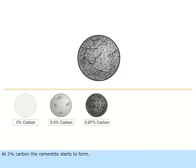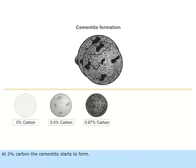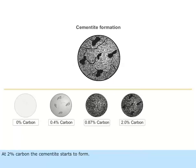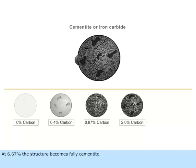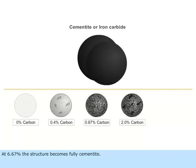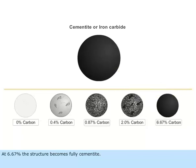At 2% carbon, the cementite starts to form. At 6.67%, the structure becomes fully cementite.